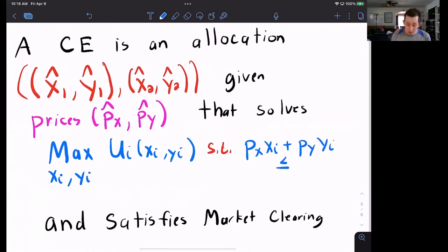What wealth does he have? Well, he has an endowment. He woke up with a box on his porch this morning, and he can only spend the worth of that box. The worth of that box is Px*Wxi + Py*Wyi.